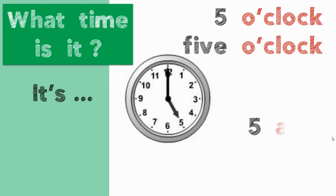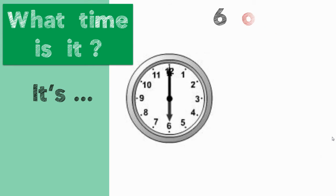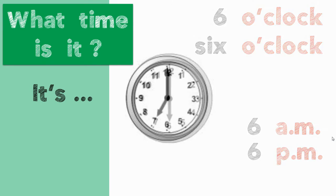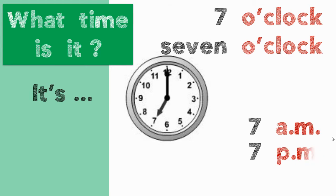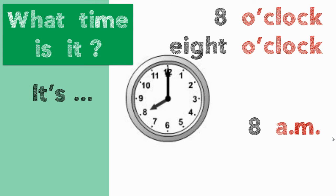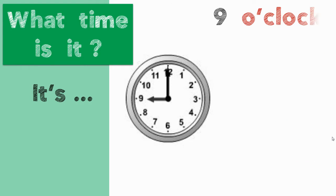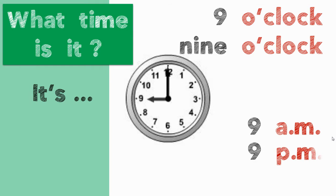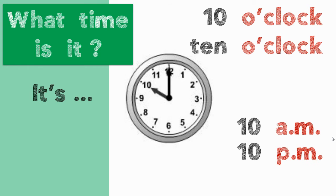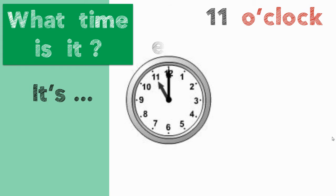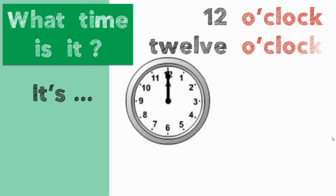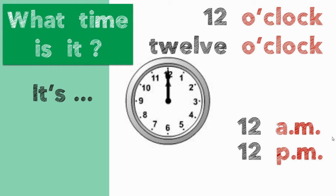It's 5 o'clock. It's 5 a.m. or 5 p.m. It's 6 o'clock — 6 a.m. or 6 p.m. It's 7 o'clock — 7 a.m. or 7 p.m. It's 8 o'clock — 8 a.m. or 8 p.m. It's 9 o'clock — 9 a.m. or 9 p.m. It's 10 o'clock — 10 a.m. or 10 p.m. It's 11 o'clock — 11 a.m. or 11 p.m. It's 12 o'clock — 12 a.m. or 12 p.m.